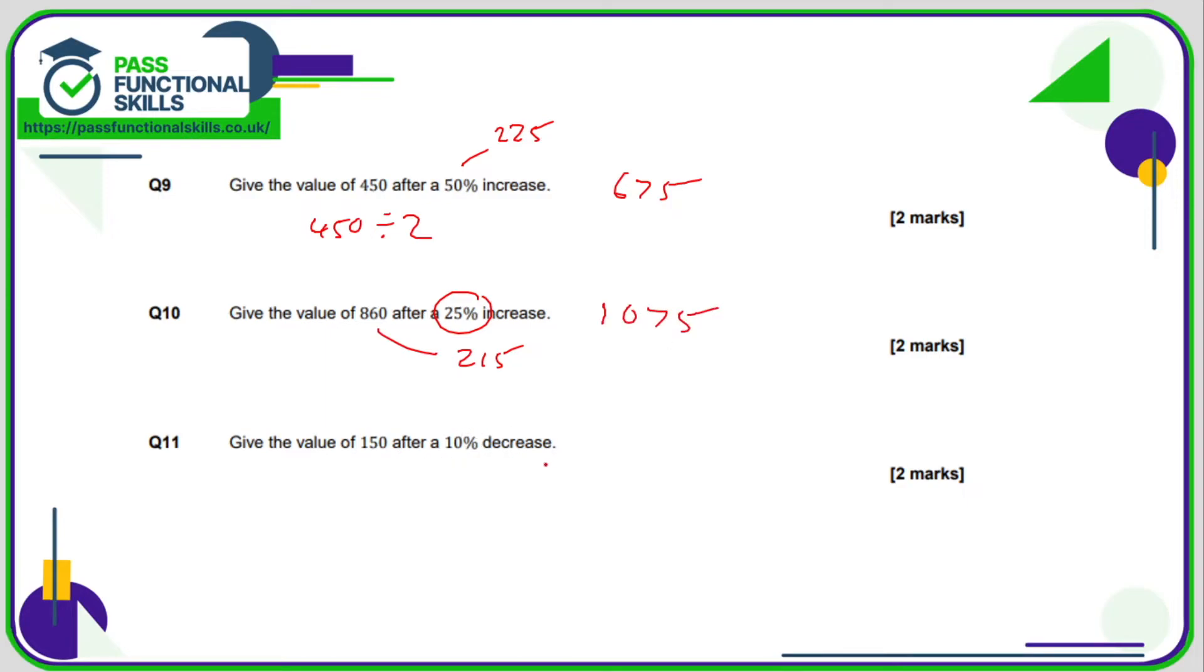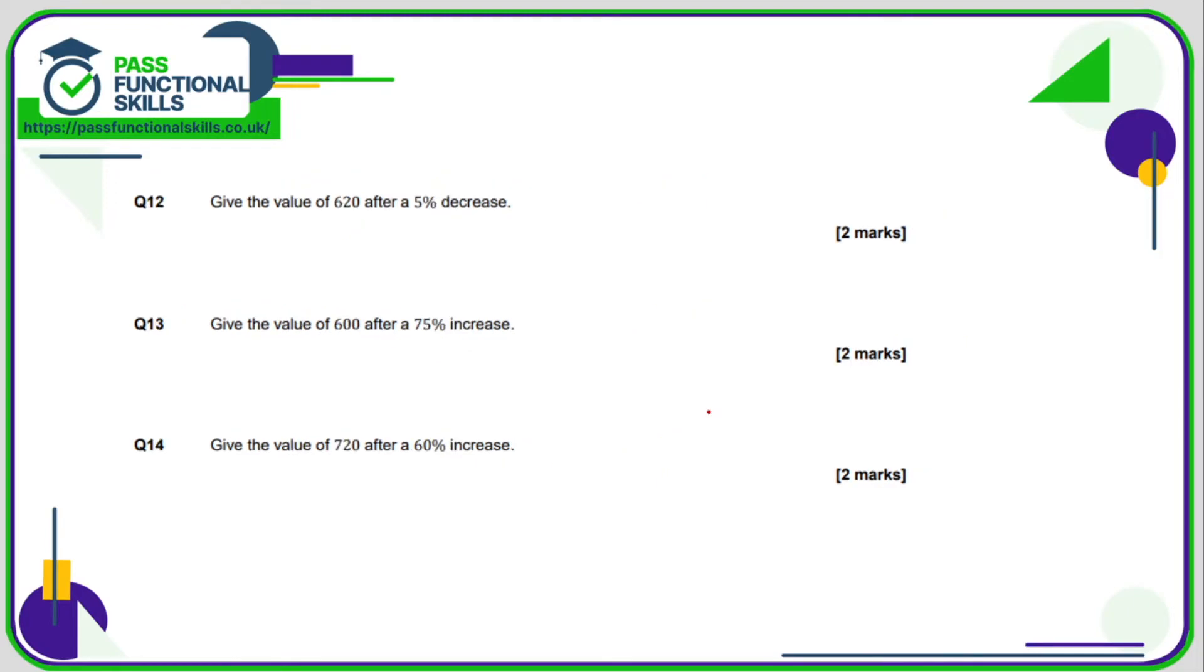10% of this amount is 15. So we're subtracting 15 from 150. That's 135. 5%, what's 5% of 620? Well, 10% is 62. So 5% is 31. So all we need to do is subtract 31 from 620. And that gives us 589.